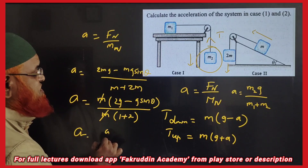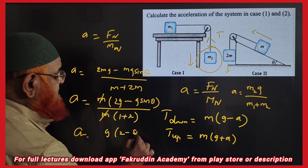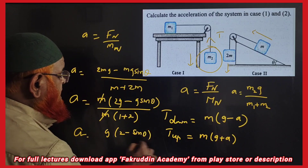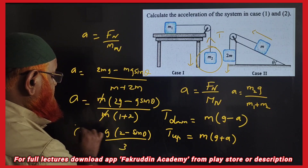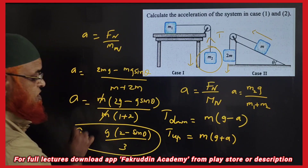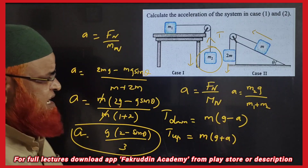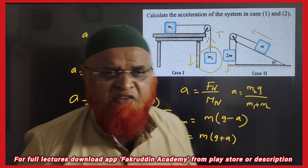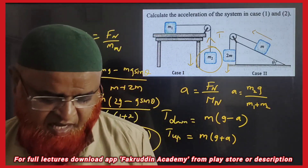You can common out G as well. Therefore, acceleration equals G times (2 minus sine theta) divided by 3. This is the shortcut method to find acceleration without using any free body diagram. Hope you have enjoyed this. Thank you.